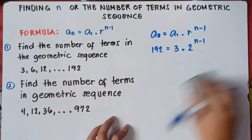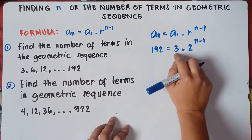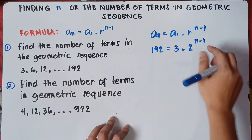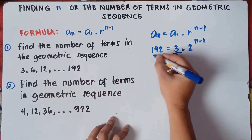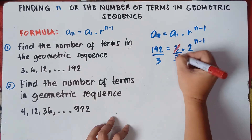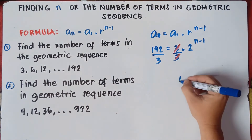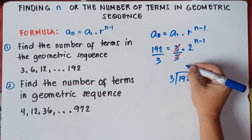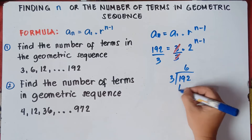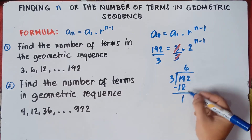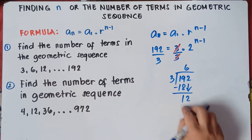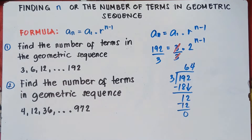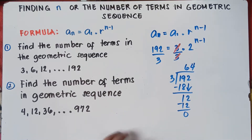Next step: we need to divide both sides by 3 to eliminate the 3, so that the main equation will be 2 raised to the power of n minus 1. Divide both sides by 3 so we can cancel it out. 192 divided by 3, that is 64.